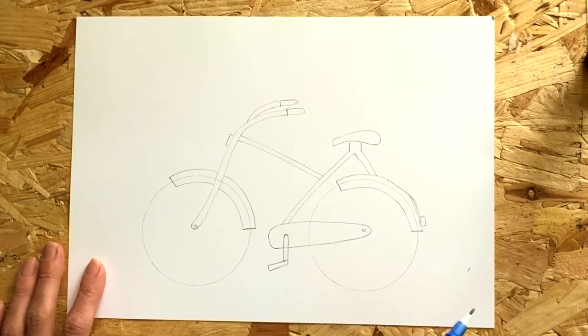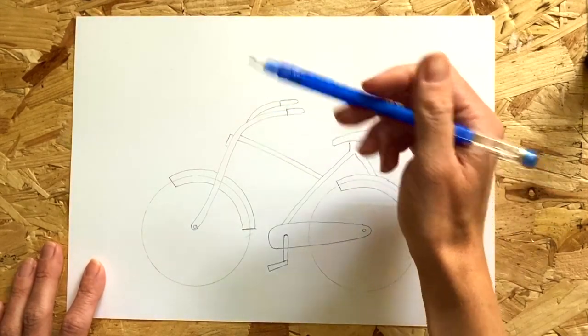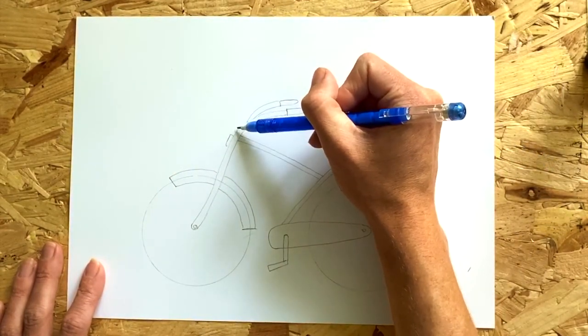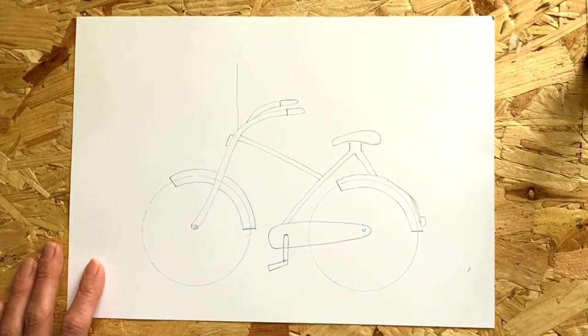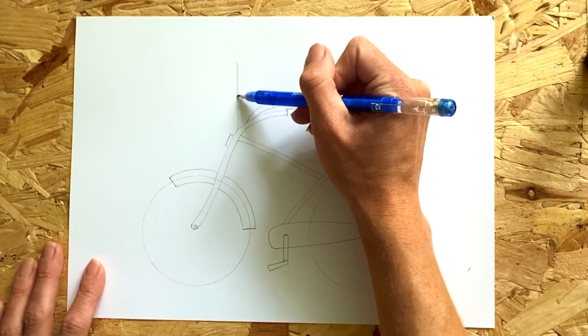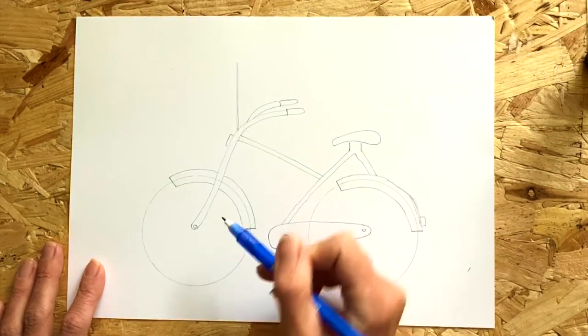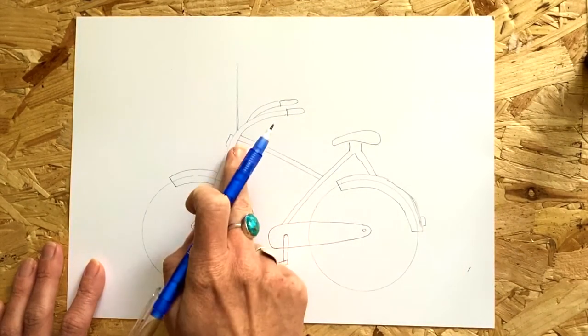Now our bicycle is going to have a nice little banner flag blowing in the wind with a lovely positive message. So draw a line straight upwards from where the handlebar's curve is. Draw another line parallel next to it all the way down. It only has to be very thin because it's going to represent a stick.